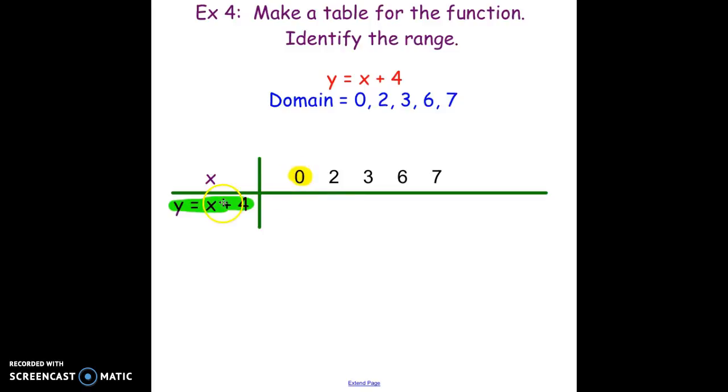If I put in 0, 0 plus 4 is 4. I put in 2, 2 plus 4 is 6. Put in 3, 3 and 4 is 7. 6 and 4 is 10. 7 and 4 is 11. I've completed my table. If you recall, the range is your set of outputs, so the range in this case is 4, 6, 7, 10, 11.